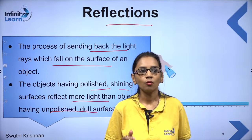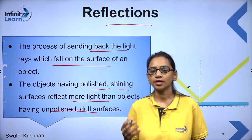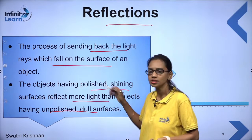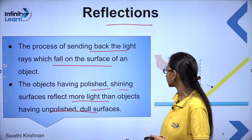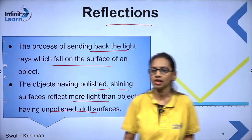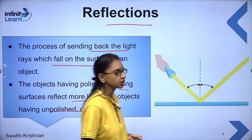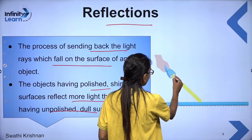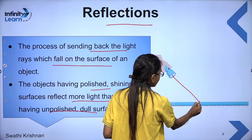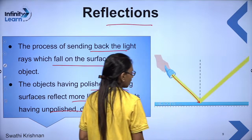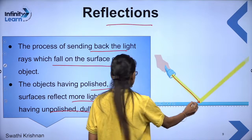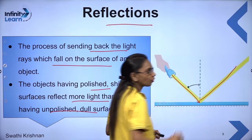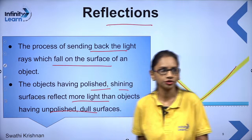Here you can see in the image how reflection happens — from the light source, the light ray comes, hits an object, and goes back. This entire process is called reflection. The surface of water can also act like a mirror and change the path of light.